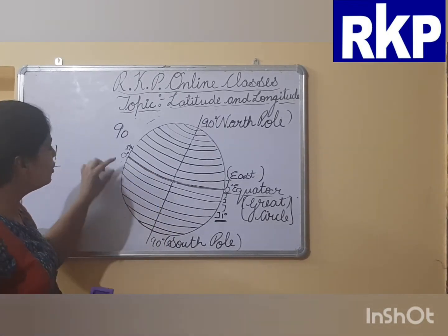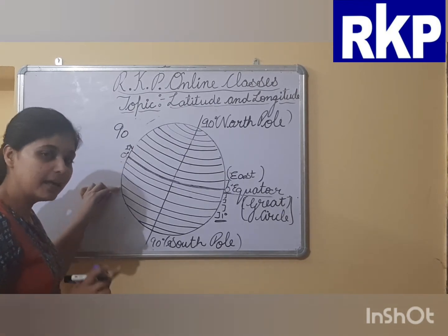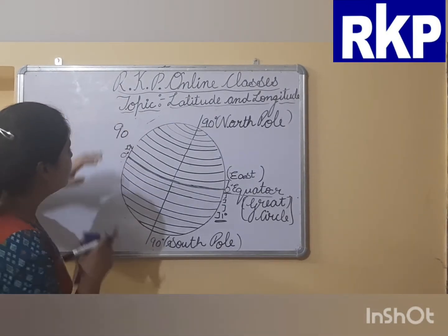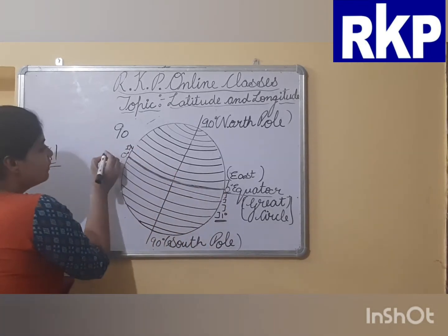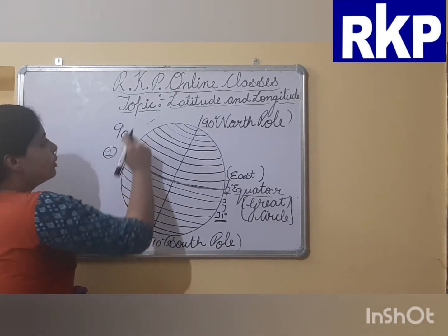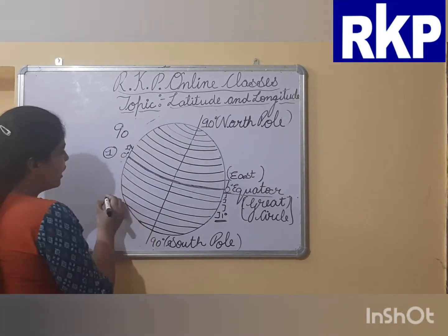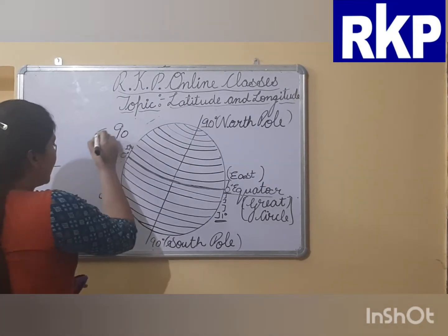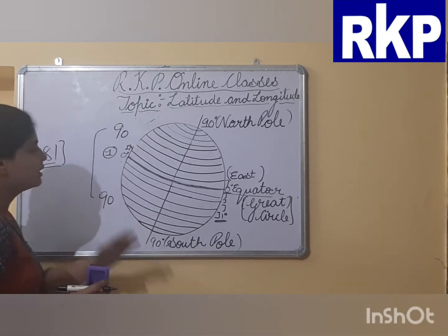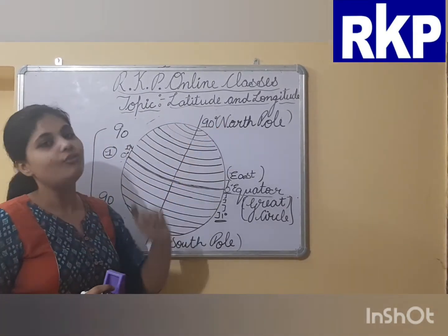Similarly, moving from equator to the south pole: 0 degree equator, then 1 degree S, 2 degree S, 3 degree S — and similarly up to 80 degree S and 90 degree S. So in totality: 1 for equator, plus 90 latitude lines from equator to north pole, plus 90 from equator to south pole — giving 181 latitude lines in total, with a gap of 1 degree between each line. That's why we also call them parallels of latitudes.